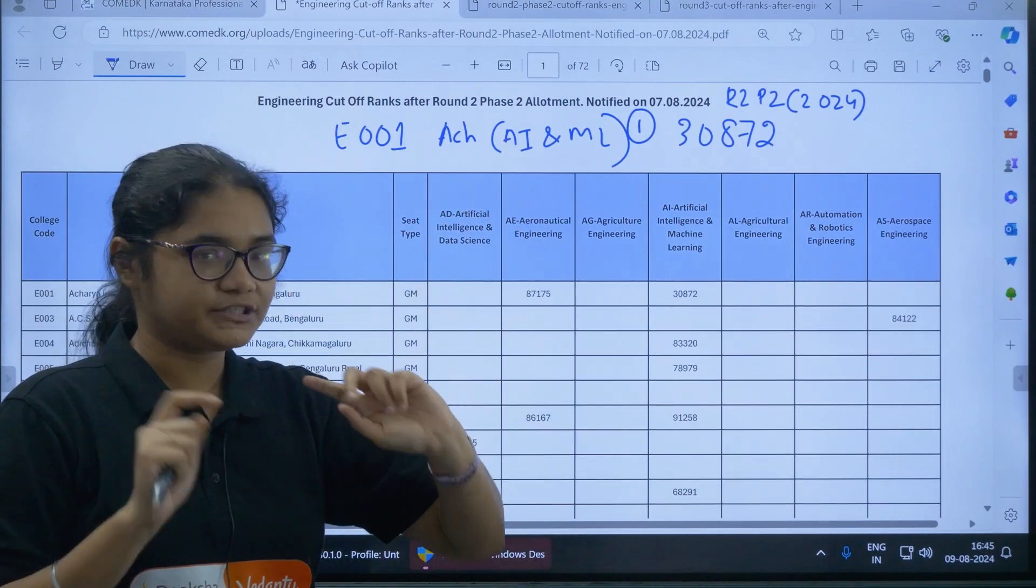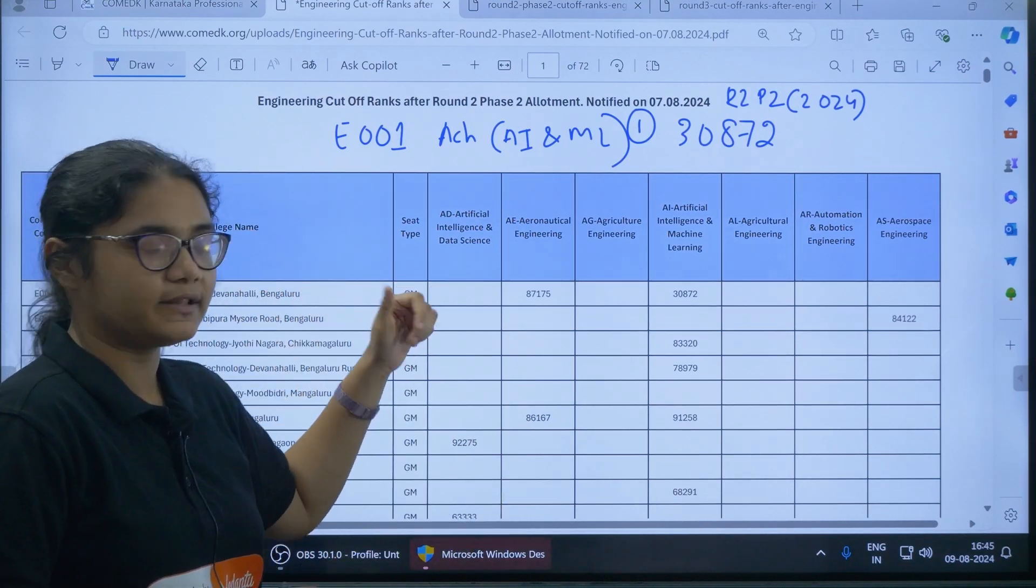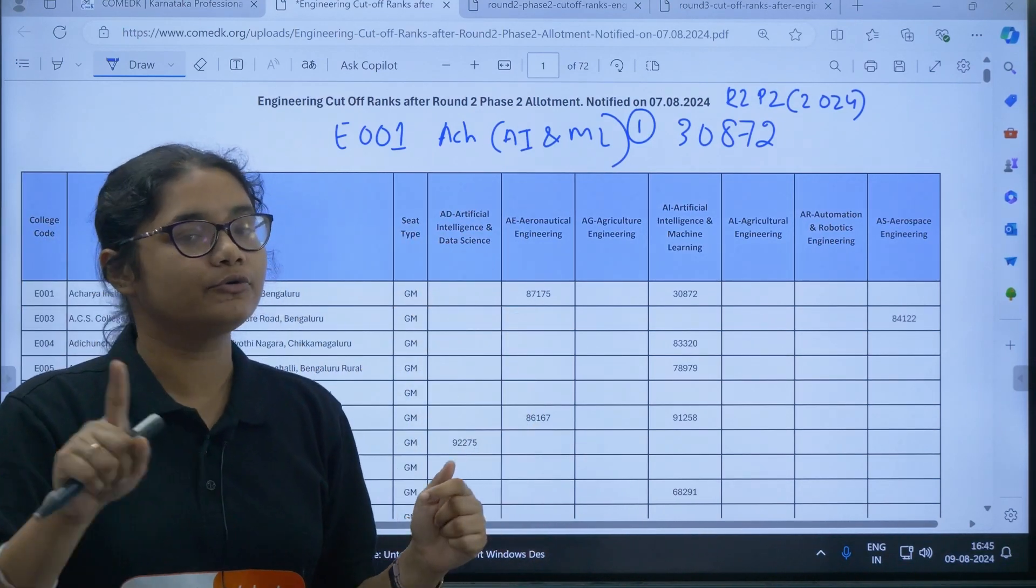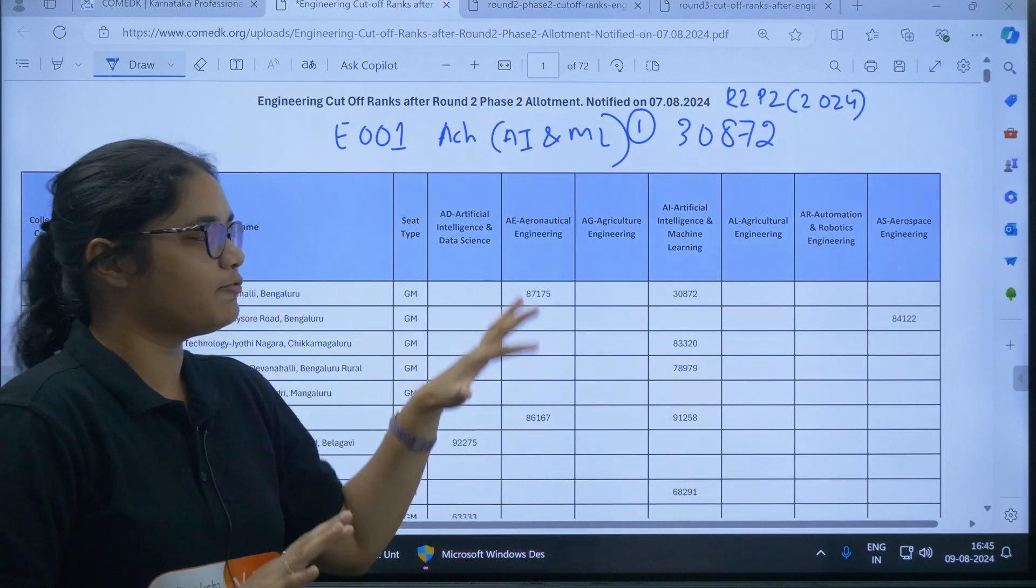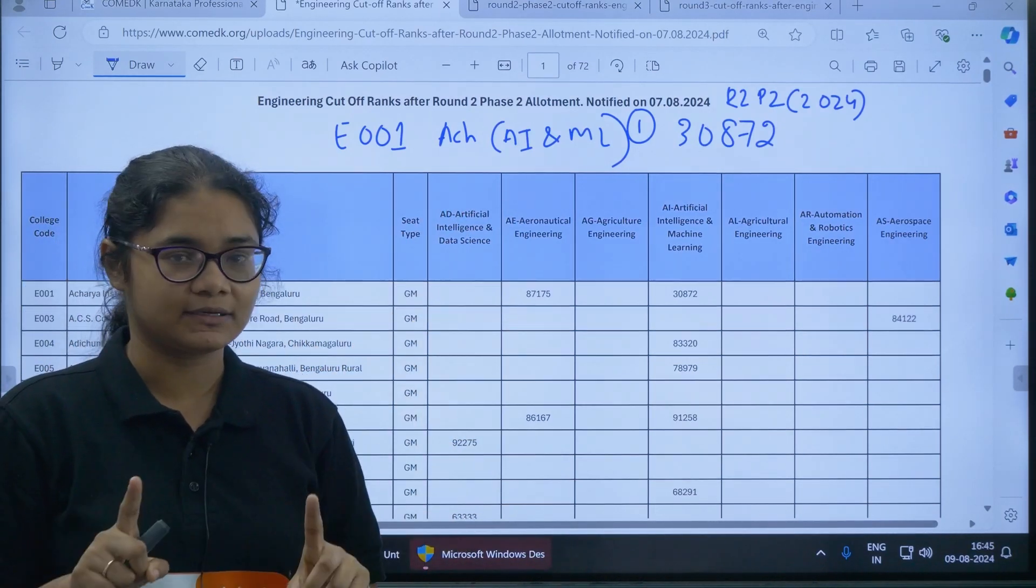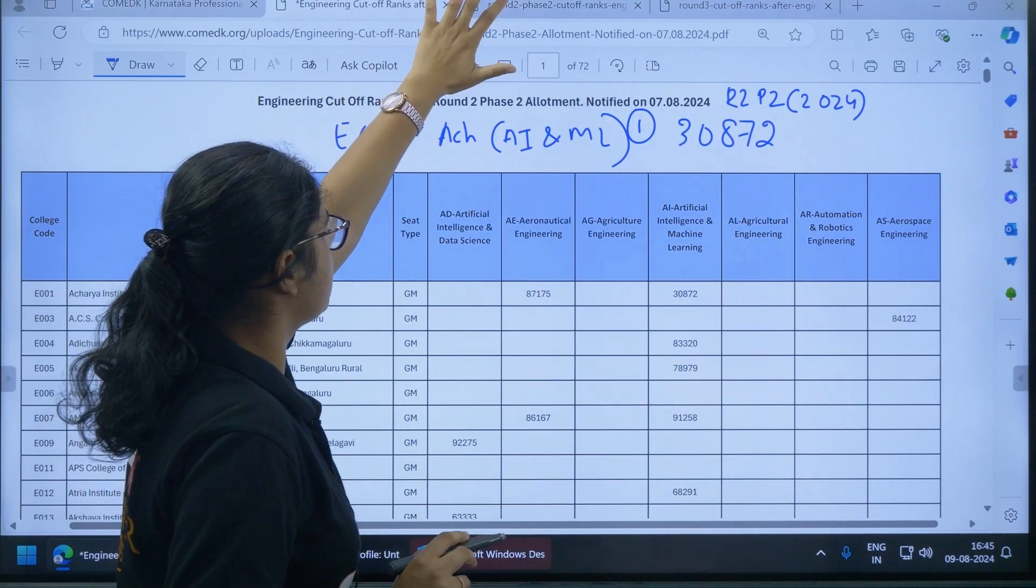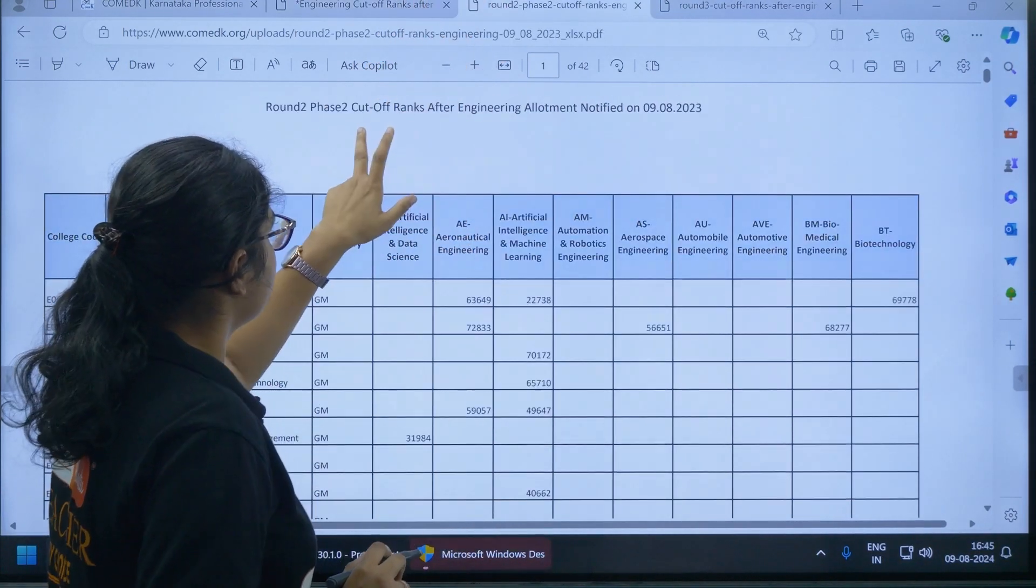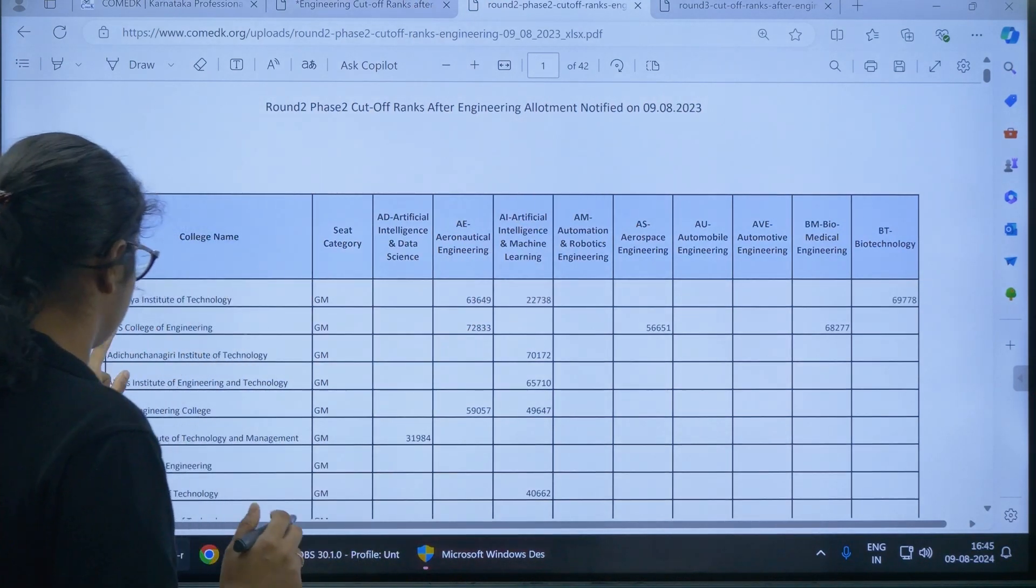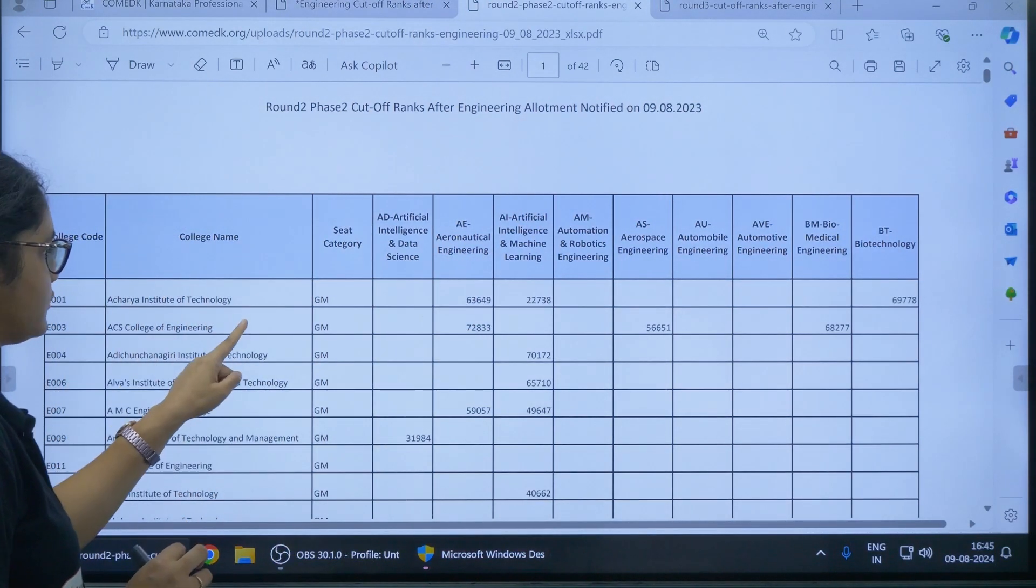Second step is to check the same cutoff, the cutoff for the same college and course for 2023 Round 2 Phase 2. The PDF of that Round 2 Phase 2 cutoff for 2023 will also be there in the description section. So do not worry. This document you can see here, this is Round 2 Phase 2 cutoff for 2023. So I will check the same college, Acharya Institute of Technology.